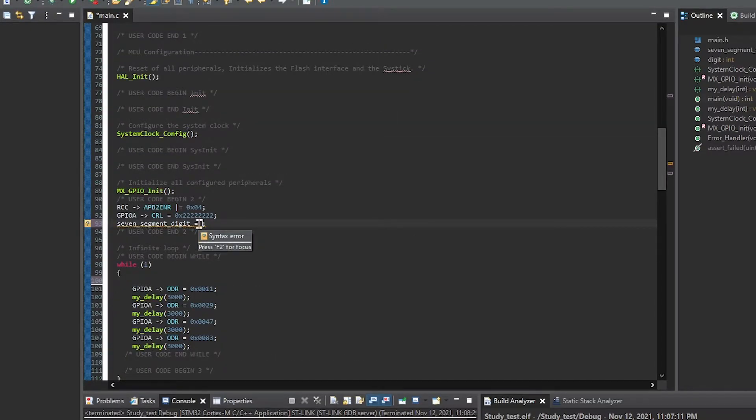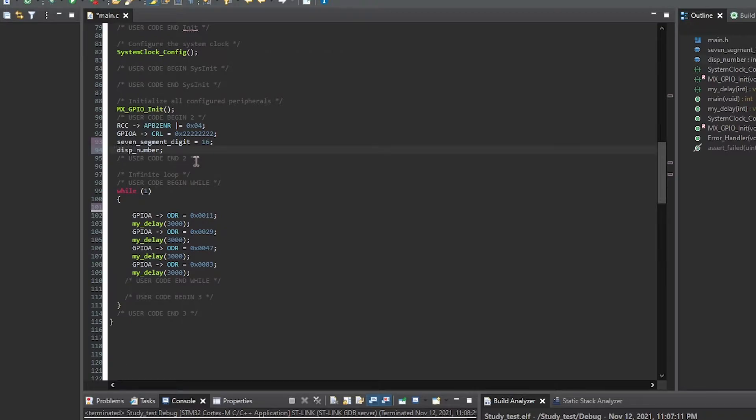Let's give these variables some values. This digit is going to define which 7-segment display digit is going to be active. In other words, I will probably want it to be 16 and this is going to be our display number. Let's copy it right here and make it, well, whatever. Let's say the same as it was.